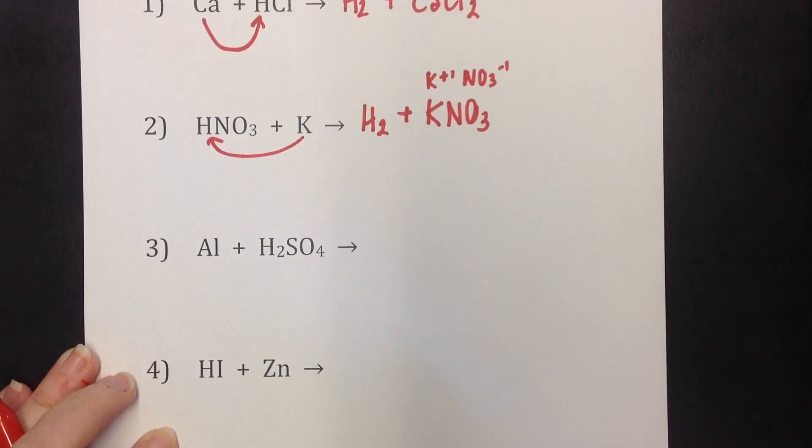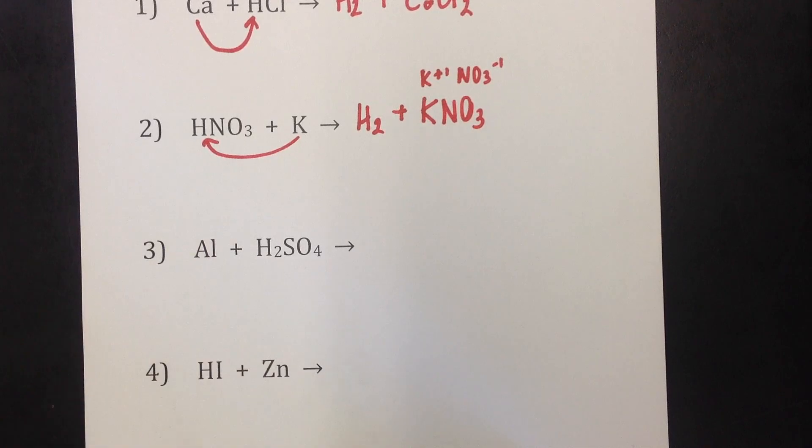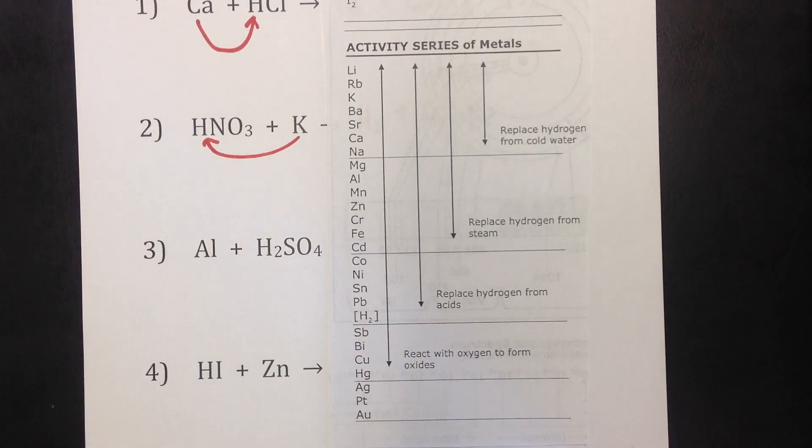So now let's look at number three. We have aluminum and sulfuric acid. So what aluminum wants to do, being a metal, is it wants to kick that hydrogen out of that sulfuric acid. So let's look at the activity series and see if that can happen.